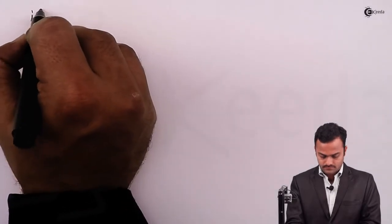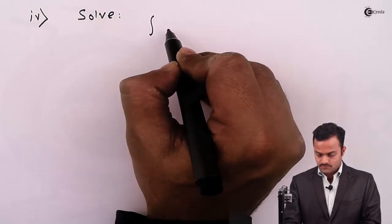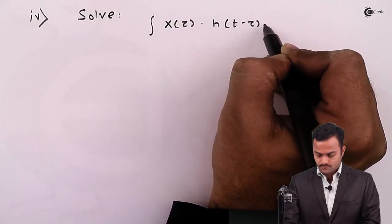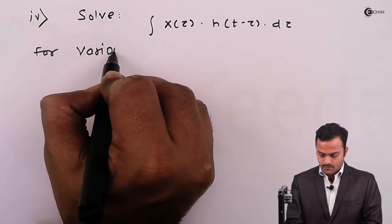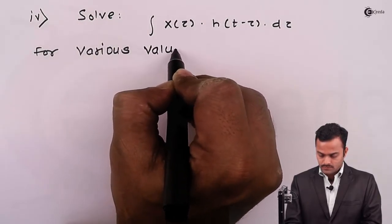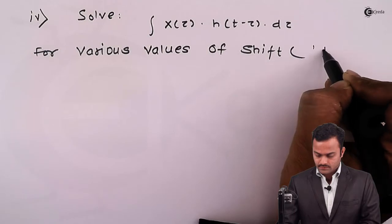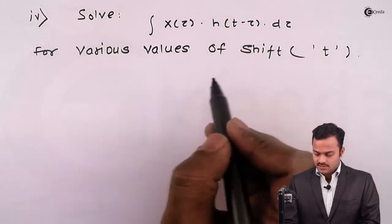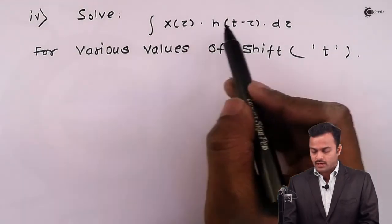we have to solve this integral for various values of shift, and that is nothing but t. Because, for this integral, especially these limits, these limits are obtained by the area which is common between x(τ) and h(t - τ).